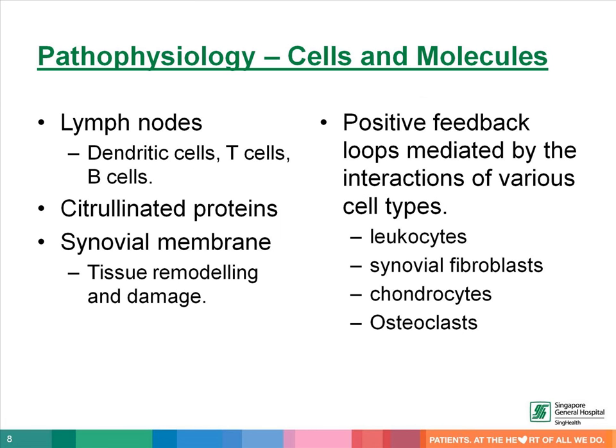At the cellular level, the interactions between dendritic cells, T cells, and B cells occur mainly in the lymph nodes, resulting in an autoimmune response to citrullinated proteins. In the synovial membrane, adaptive and innate immune pathways integrate to promote tissue remodeling and damage. Positive feedback loops are mediated by the interactions among white cells, fibroblasts, chondrocytes, and osteoclasts, together with the molecular products of damage, all driving the chronic inflammation in rheumatoid arthritis.